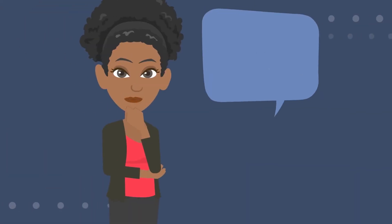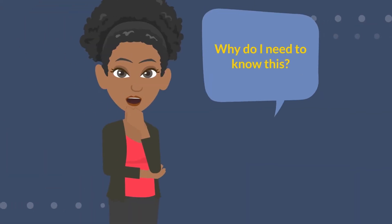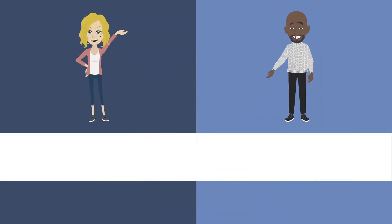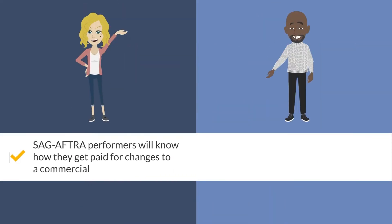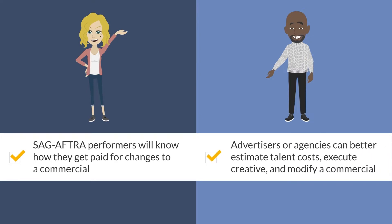You may be asking, why do I need to know this? As a SAG-AFTRA performer, you'll want to know how to get paid for changes to a commercial. And as an advertiser or agency, you may want to know the new parameters around editing so you can better estimate talent costs, execute creative, and modify a commercial.